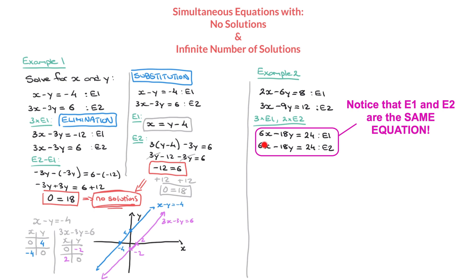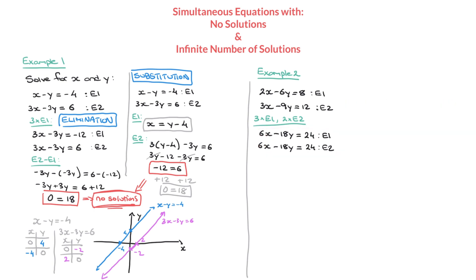Now that we have as many x's in both equations, to eliminate them we subtract one equation from the other — e1 minus e2. On the left-hand side: 6x minus 6x is 0, and negative 18y minus negative 18y becomes negative 18y plus 18y, which is 0. On the right-hand side: 24 minus 24 equals 0. So we're left with 0 equals 0.